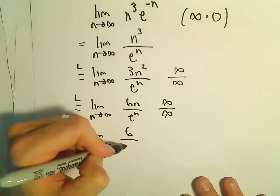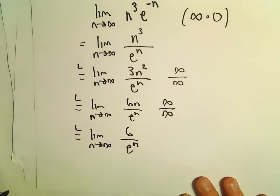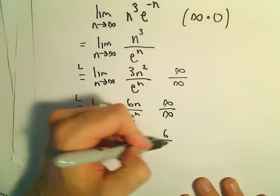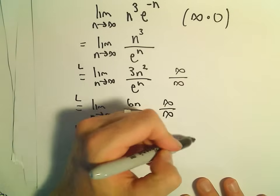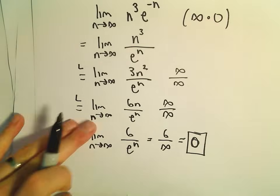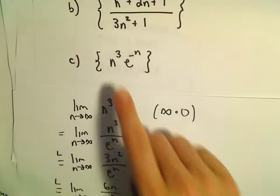Then we'll be left with 6 in the numerator. We'll still have e to the n in the denominator. But now this is going to be 6 over a really big number, which is going to get arbitrarily close to 0. So we would say this last sequence converges to the number 0.